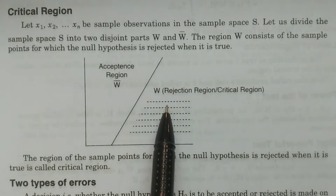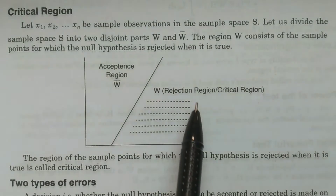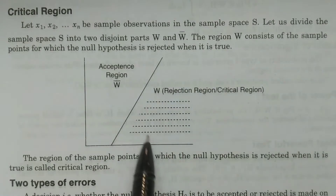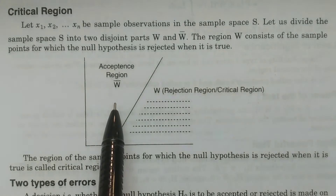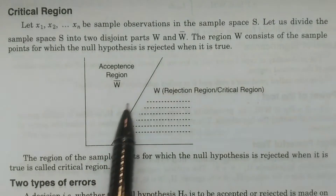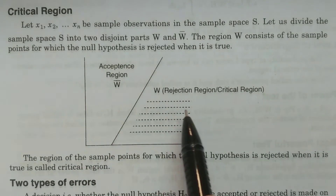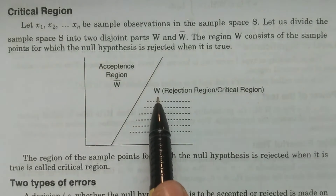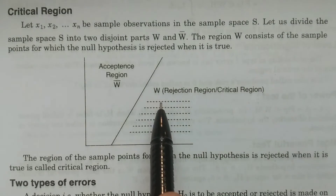We have two regions. Whichever sample point is rejected, we put it in the rejection region W. Whichever point is accepted, we put it in the acceptance region W complement. After testing, whichever sample points fall in this particular region formulate the rejection region.